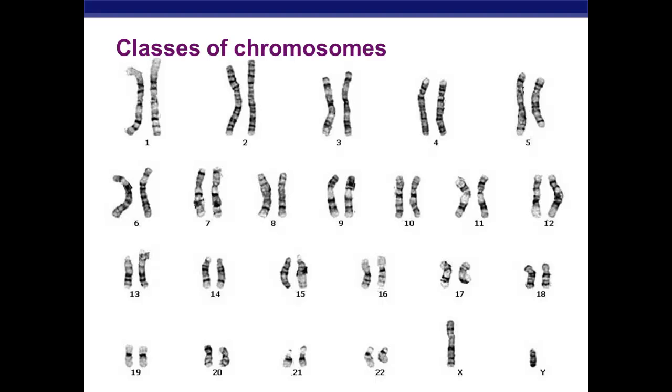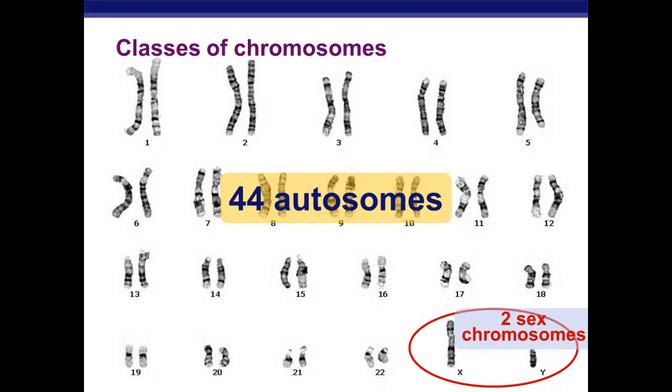Now before we can talk about sex-linked traits, we need to remember our chromosomes. Remember humans have 44 autosomes. Those are the chromosomes that both males and females have. We also have two sex chromosomes, X and Y. For instance, this here is a karyotype of a male, because there's one X chromosome and one Y chromosome.